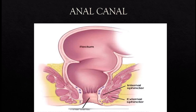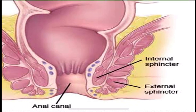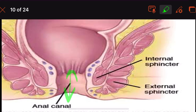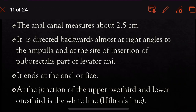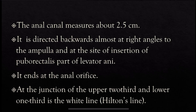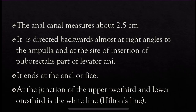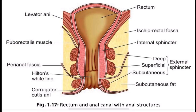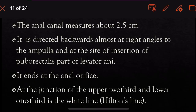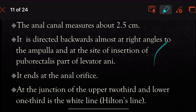The anal canal measures about 2.5 cm in length. It is directed backward, mostly at right angles to the ampulla, at the site of insertion of the puborectalis part of the levator ani muscle. The anal canal ends in the anal orifice. At the junction of the upper two-thirds and lower one-third, there is a white line known as Hilton's line.